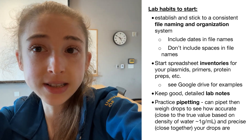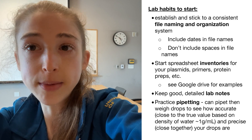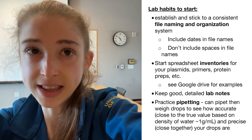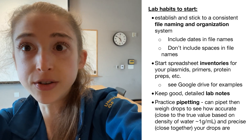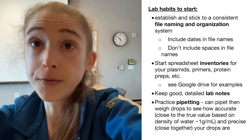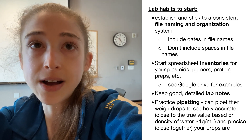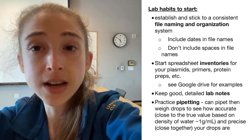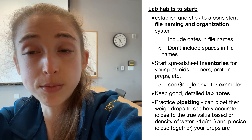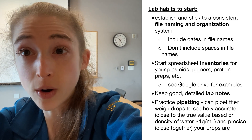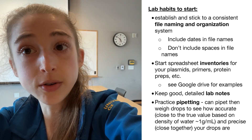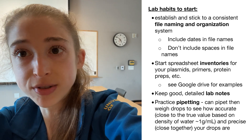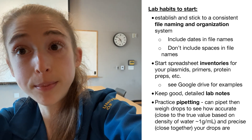I also recommend keeping inventories — spreadsheets with information about your various plasmids, primers, protein preparations, and things like this — so you can find information more easily. Now getting to bench work: pipetting is super important and you want to make sure you're doing it right. Practice pipetting a lot at the beginning. Pipette drops of water onto parafilm and weigh them to check that the weight matches what you'd expect based on the density of water, ensuring your measurements are both accurate and precise.